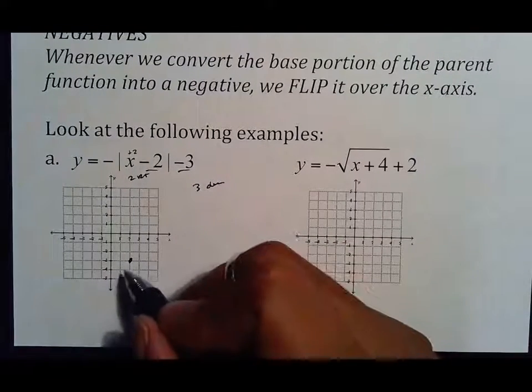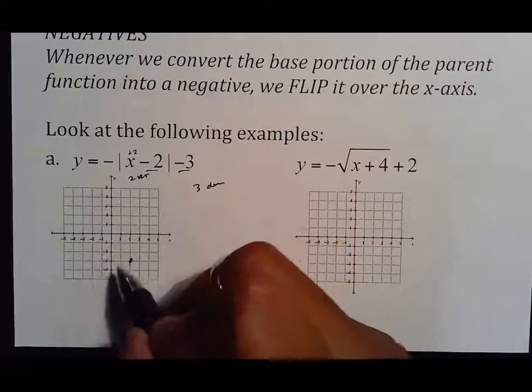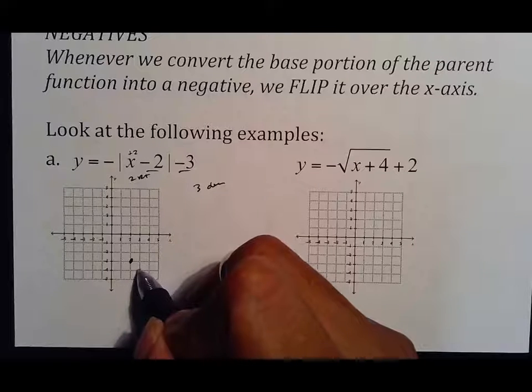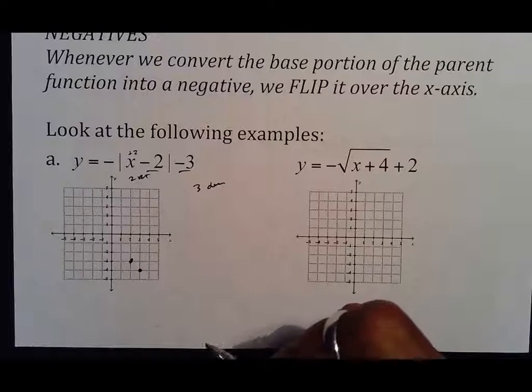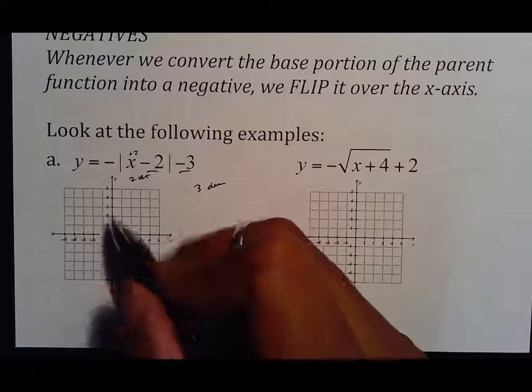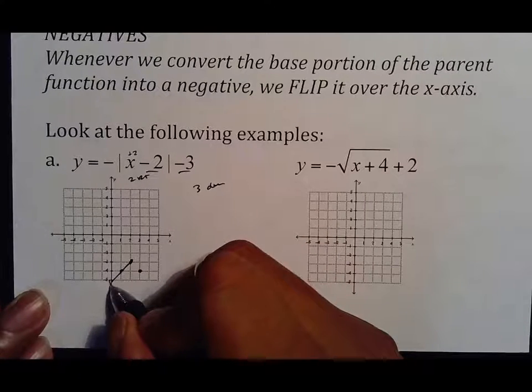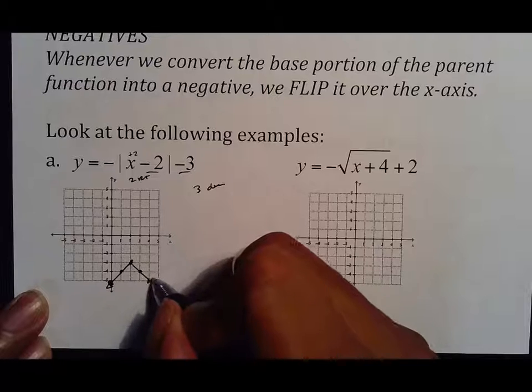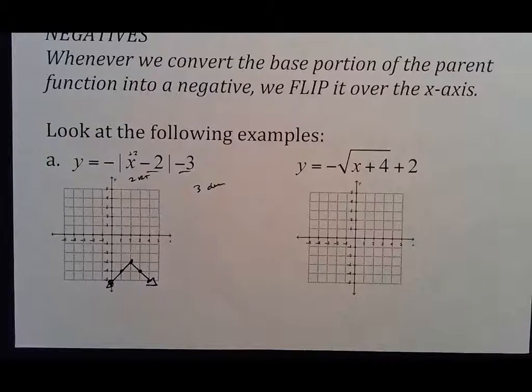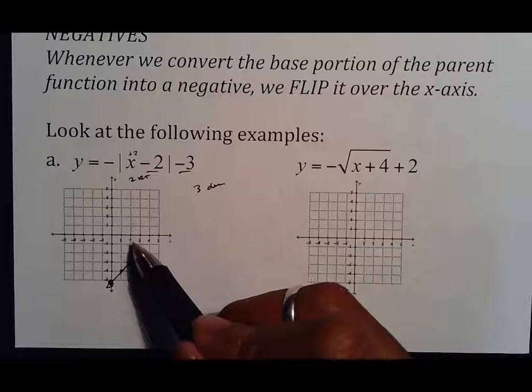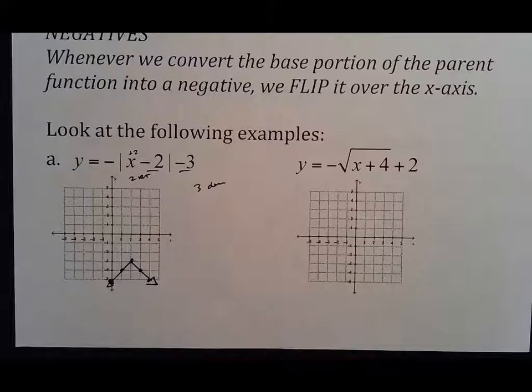The difference is, instead of going one over, one up, this negative says go one over and the opposite direction, which would be down. I would usually go one over and one up, but this is the opposite direction, which is down. And so you get a graph that looks like that. So all it is is take your instincts, and when there's a negative, if you usually go up from your home point, go down. If you usually go down, you go up.